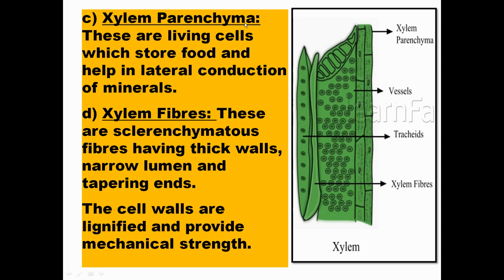Xylem parenchyma is the living component of xylem. These cells have large intercellular spaces and a thin cell wall, and they store food and help in the lateral conduction of minerals. Xylem fibers are sclerenchyma cells with thick, lignified walls and a narrow lumen with tapering ends. They provide mechanical strength to the plant, just as other dead cells do.